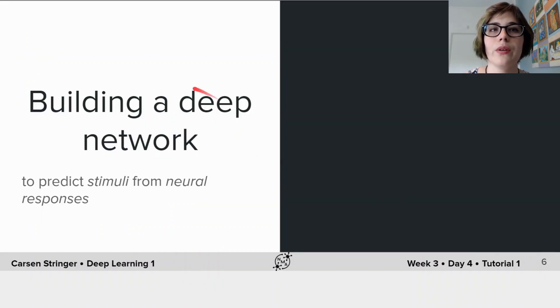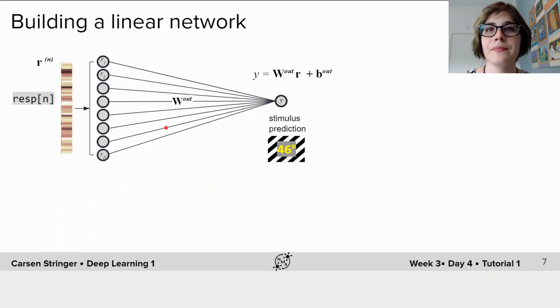So to do this, we're going to build a deep neural network to predict stimuli from neural responses because we're now in a regime of having large amounts of data. So first, let's start with a linear network with no hidden layers where the stimulus prediction y is a product of the weights W out and neural responses r plus a bias term.